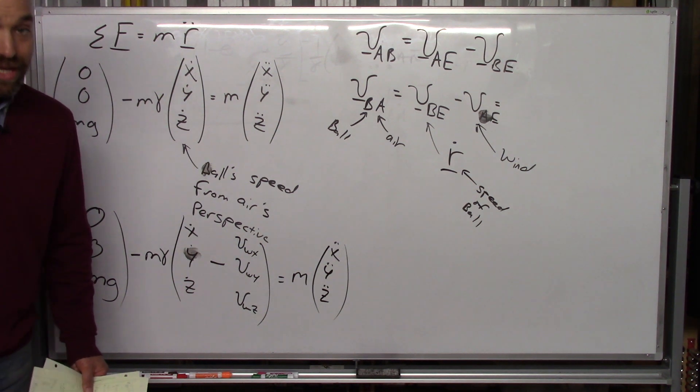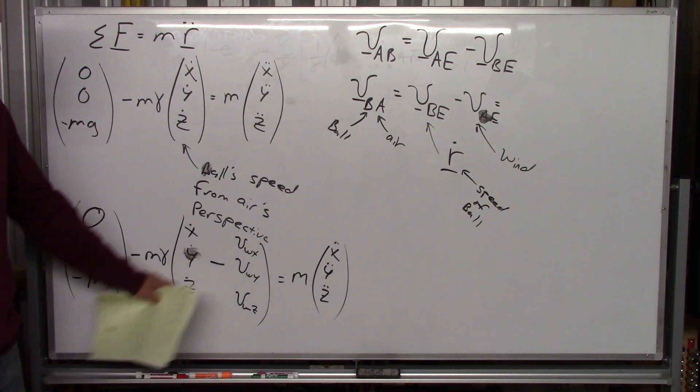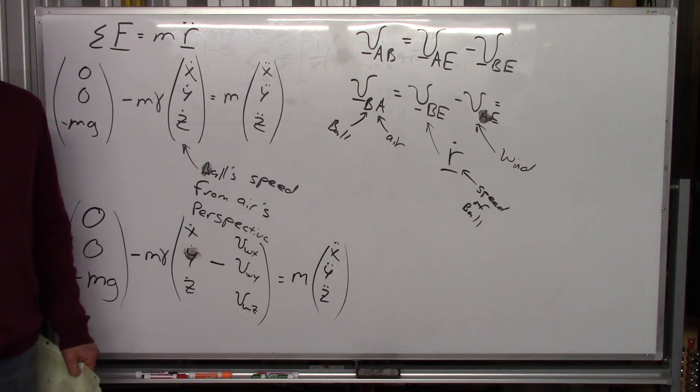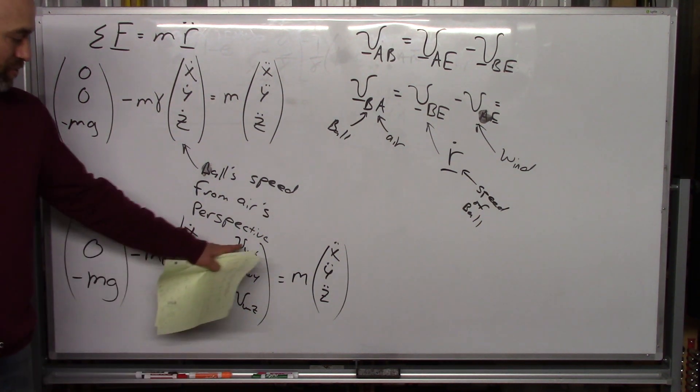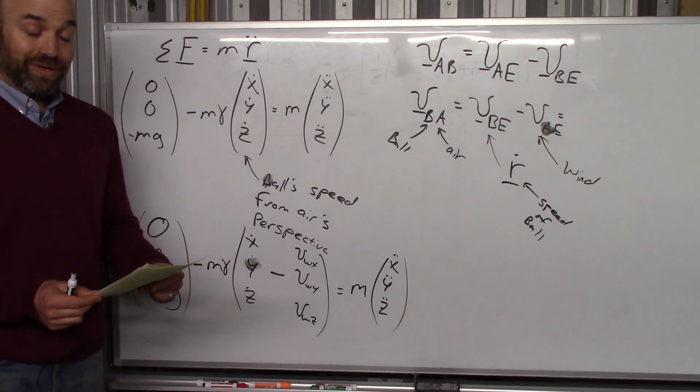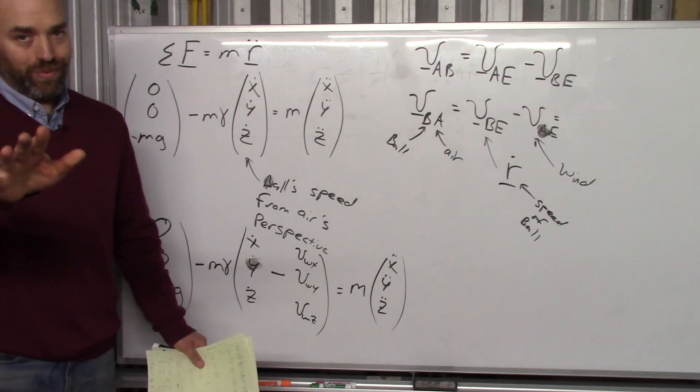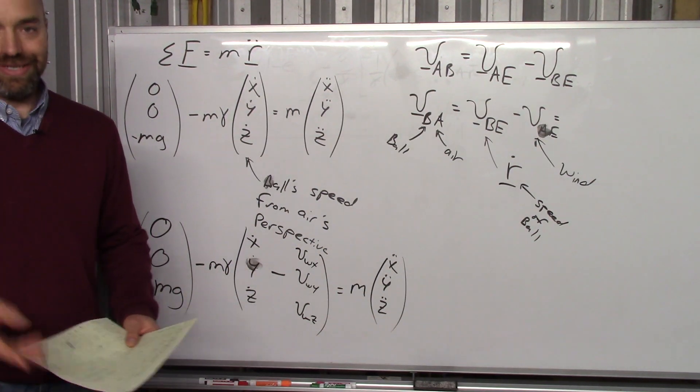And now you solve those three differential equations. Second order differential equations again. That means you've got six differential equations to solve here. And they're more complex than the ones we just did. But it can be done. Because these are just constants. So, there you go. That's how you'd factor in wind. Okay. Now, we're really done for the day. Well, at least until the next video.